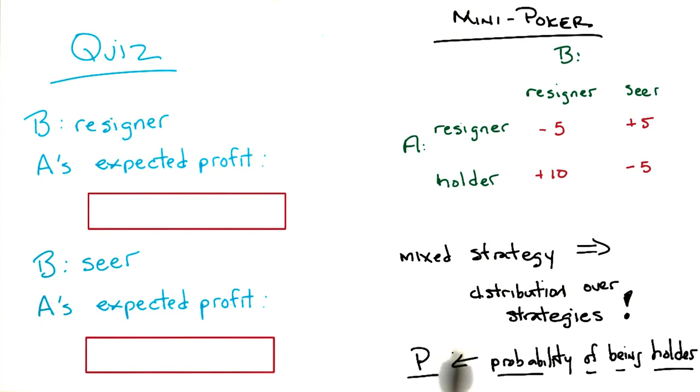If B is the resigner, we don't really care about the other column anymore. Then what's going to happen is A is mixing between resigning and holding. And probability P is probably being a holder.